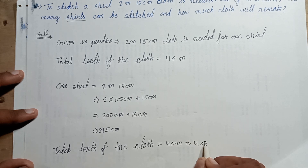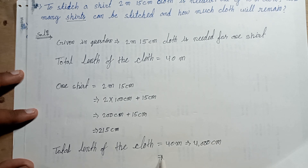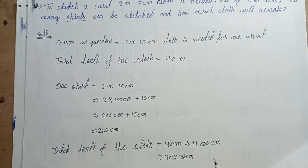Total length of the cloth: 40 multiplied by 100 centimeters equals 4,000 centimeters.